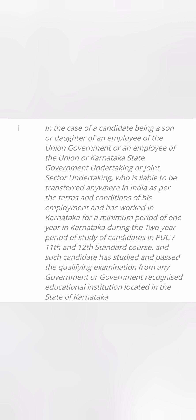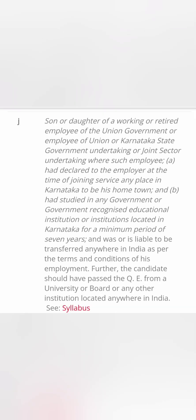Clause I is for the son or daughter of union government — meaning central government — or employees of a union or Karnataka state government undertaking or joint sector undertaking between central and state government. Their parents should have worked in Karnataka for a minimum period of one year, and their children should have studied class 11th and 12th in any government-recognized institute in Karnataka.